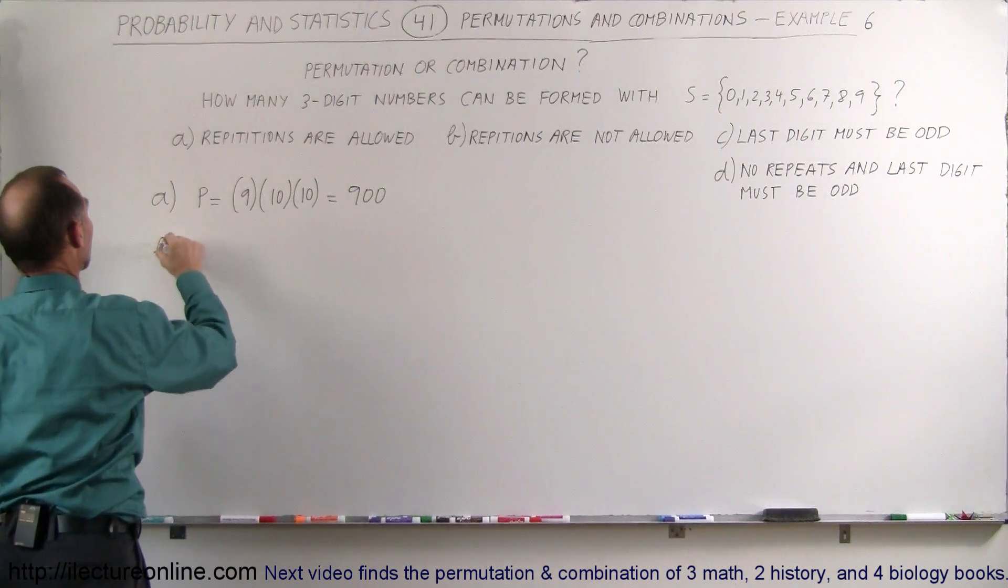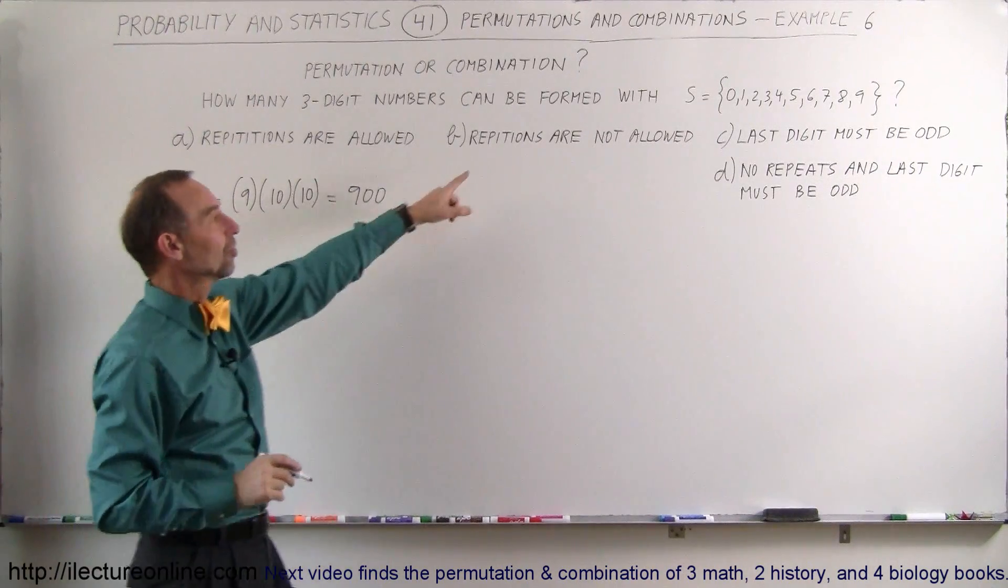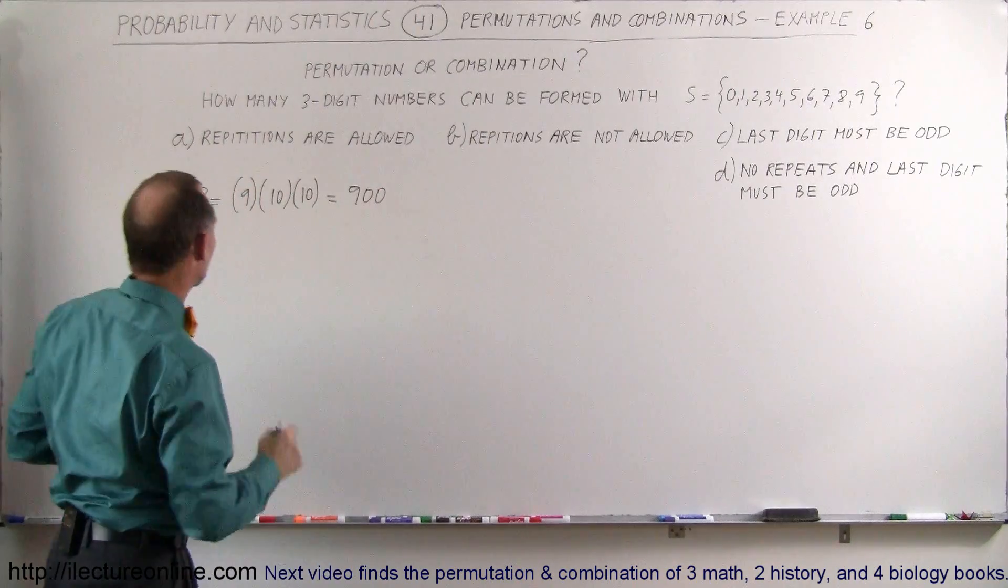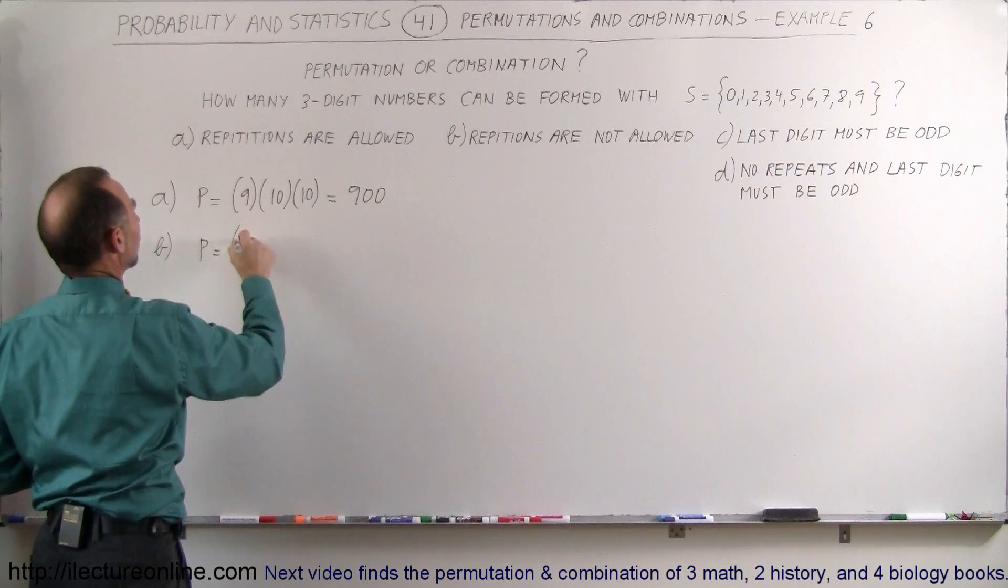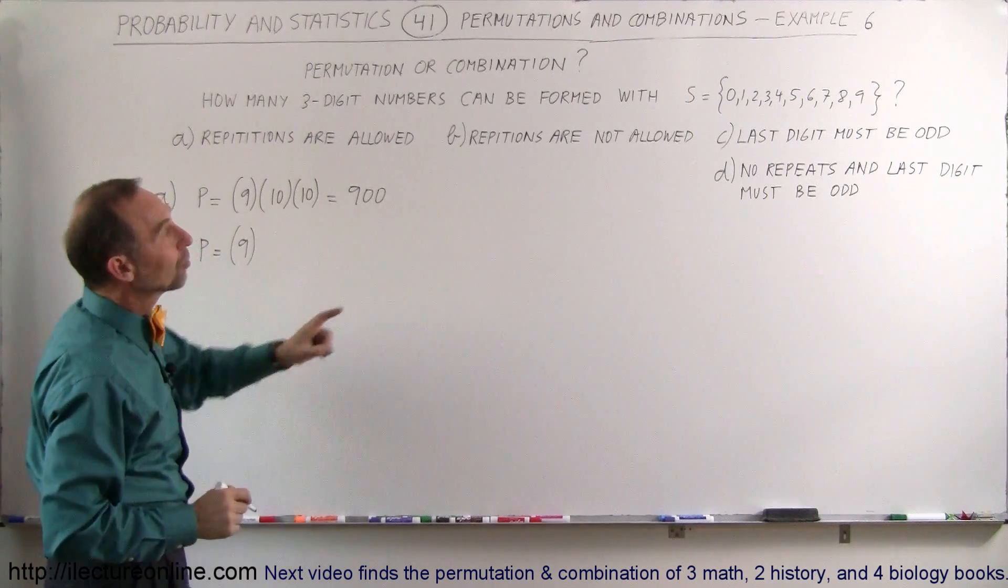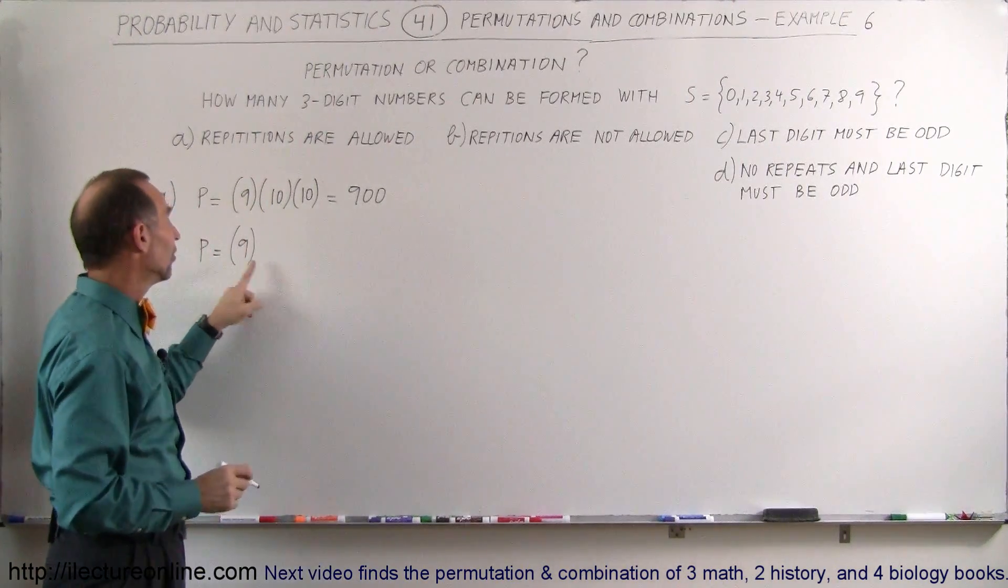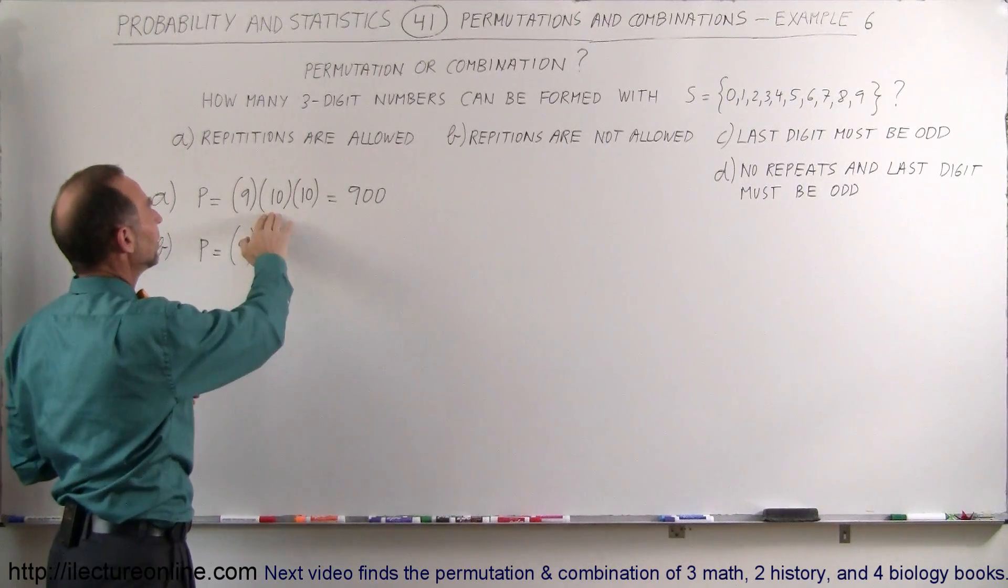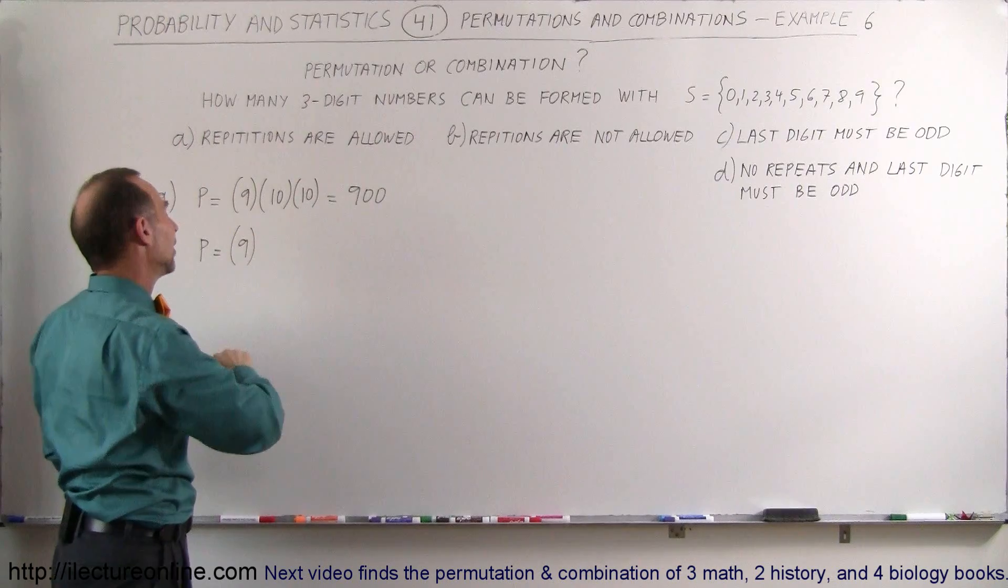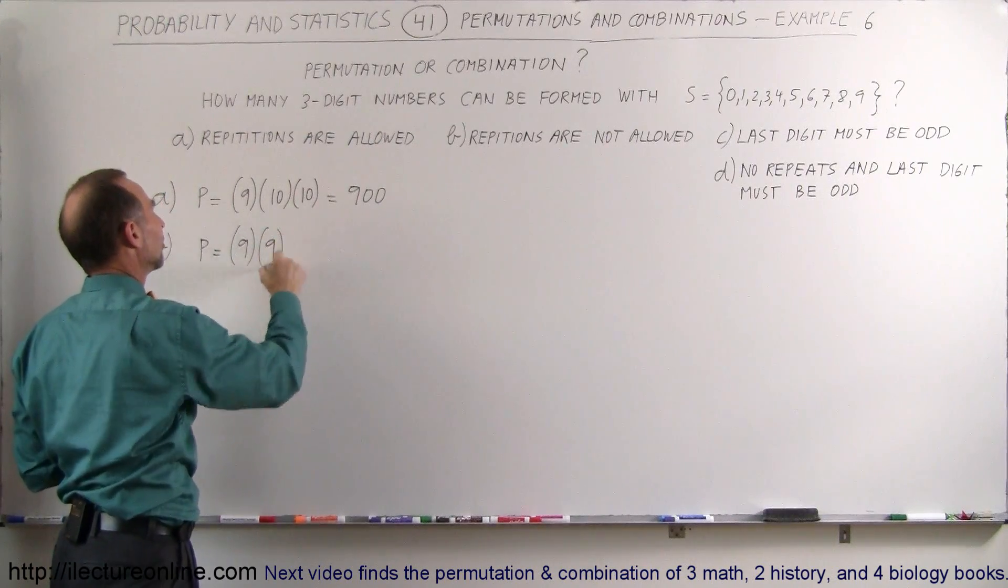For part B, now we have a restriction. Repetitions are not allowed. So on the first try, on the first digit we can only have 9 possibilities because we can't pick 0. On the second one, since we already picked one number, we can't repeat that number. Since we had 10 before, now there's one less available so you can only pick 9 for the second digit.